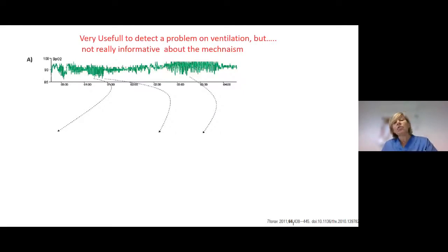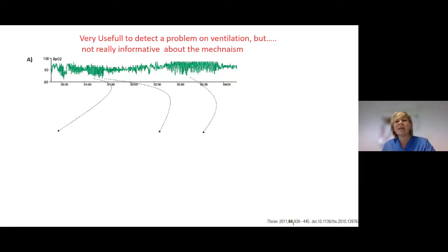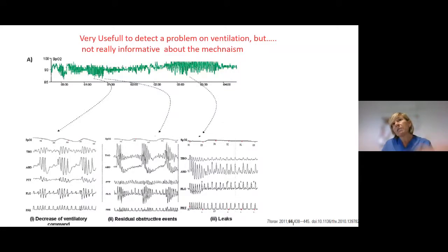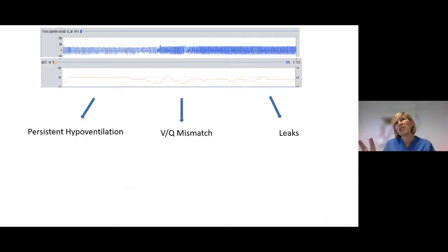The information from pulse oximetry is very useful to detect a problem in ventilation — really sensitive but not specific. For example, in a particular waveform with many rapid oxygen desaturations, this may be correlated to different mechanisms: central apnea, residual obstructive apnea, or leaks. So it is specific to detect a problem but not specific in identifying the reason.